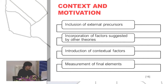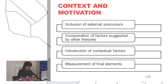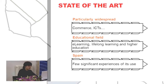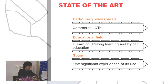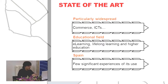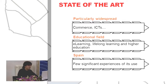In order to overcome these limitations, increase the percentage of variance the model explains, or adapt to new contexts, this model is frequently modified. The more frequent modifications can be categorized in four groups: the inclusion of external precursors, the incorporation of mediating variables, the introduction of contextual factors, and the measurement of final elements. Currently, this model is particularly widespread in the fields of e-commerce and ICTs, and is also starting to be quite popular in the educational field, overall in the context of e-learning, lifelong learning, and higher education. In Spain, the use of TAM in the educational system is still in a primary stage of development.